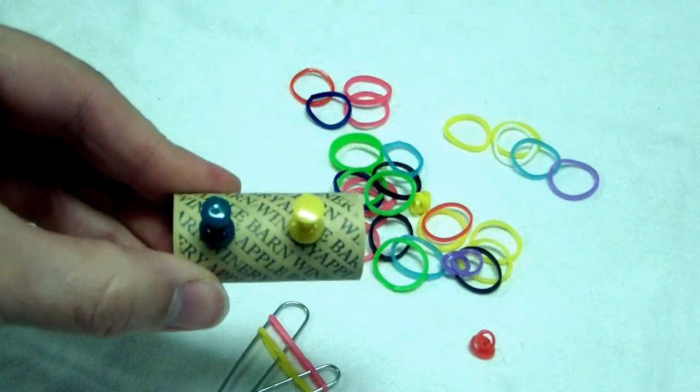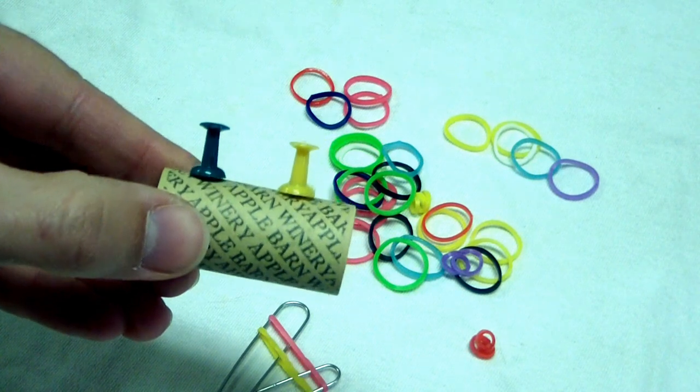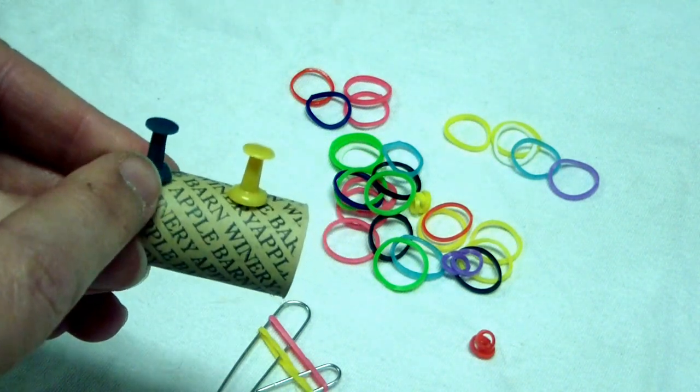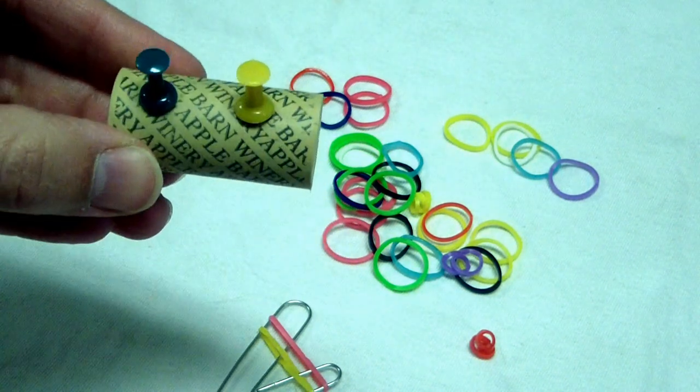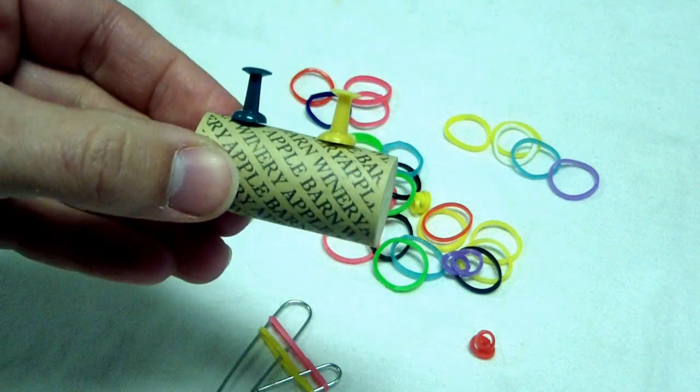And the other one is a cork. This I got out of a wine bottle, but you can get these at a craft store. And it has two tacks about an inch apart for your two peg projects.